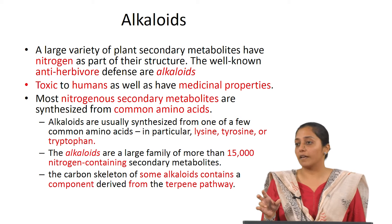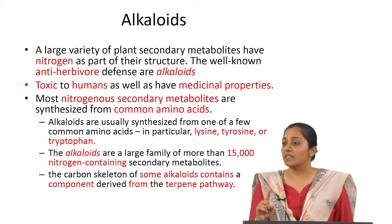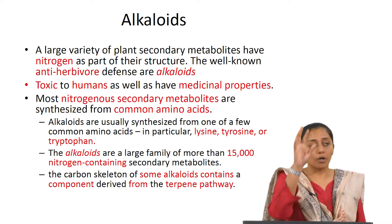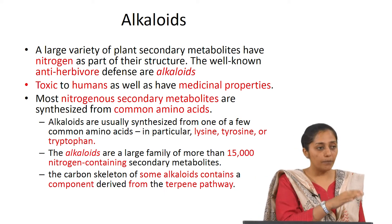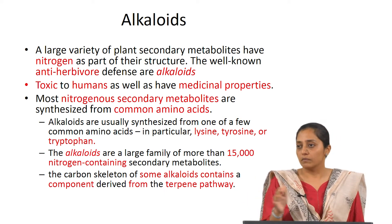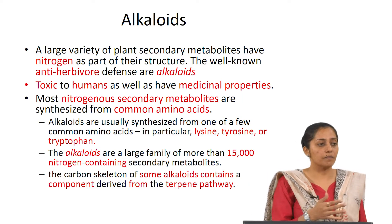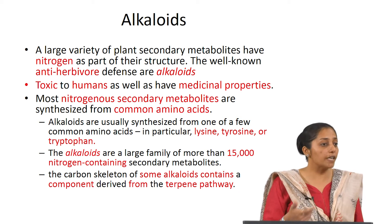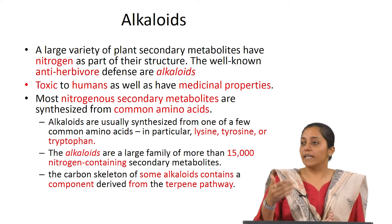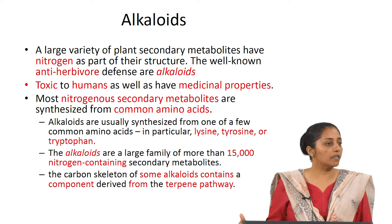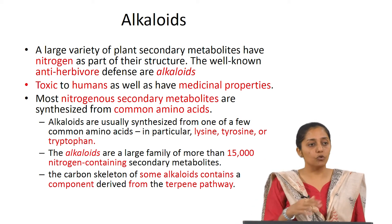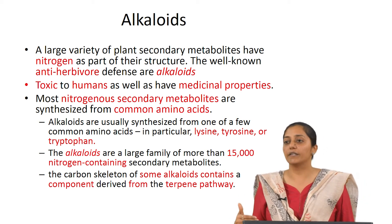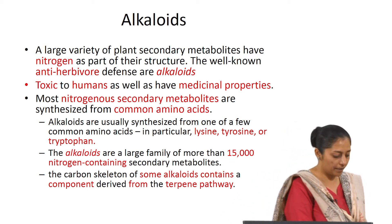Many secondary metabolites arise from combined pathways. From primary metabolism the pathways leading to secondary metabolism include the shikimate pathway, the MEP pathway, and the mevalonate pathway. Either singly or in combination, these pathways lead to diverse intermediate products, subsequently producing different types of secondary metabolites.